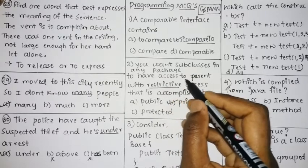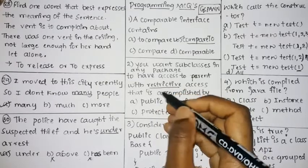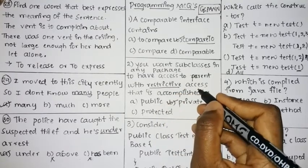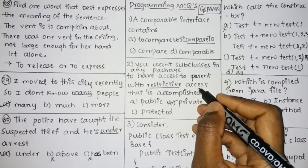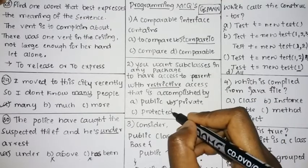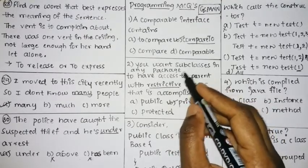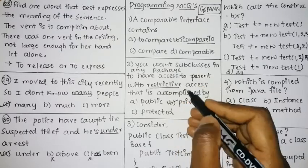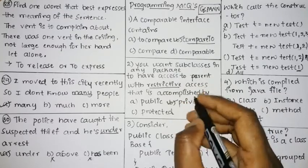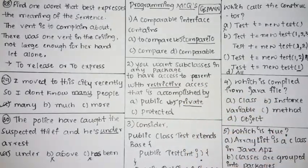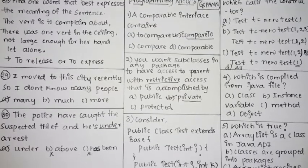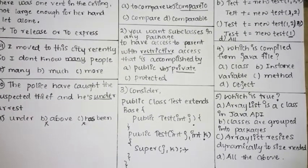Next question: you want subclasses in any package to have access to the parent with the most restrictive access. Since it must be accessible to subclasses in any package but still restrictive, it cannot be public or protected. The answer is private access, which provides the most restrictive access.